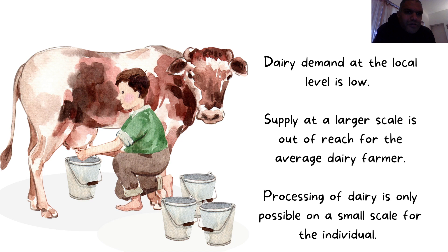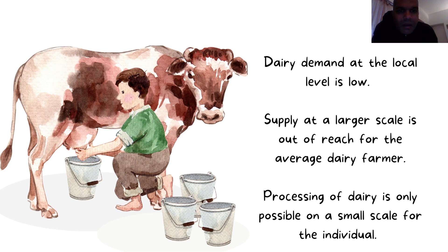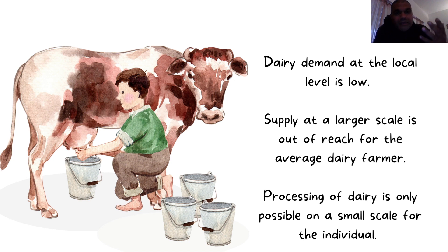Local consumption is often not that high, so even if there is a demand for 30 liters of milk it will be spread far away, and actually supplying the milk from your house to the various consumers takes more than half a day. Processing the milk - making paneer, making butter on a regular basis and actually marketing that - is also not feasible at this small scale.